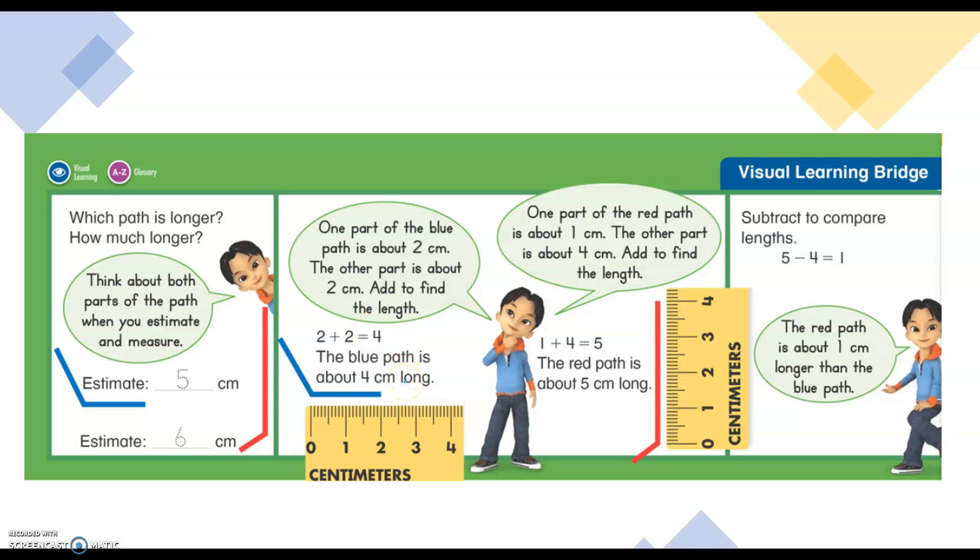One part of the red path is about one centimeter, that little part right there. We're estimating is one. The other part is about four centimeters. Again, we start at the zero and we measure all the way. We look at this end and it's on the four. So one plus four is five. The red path is about five centimeters long.